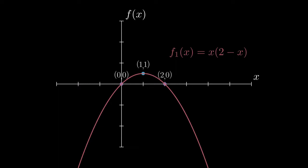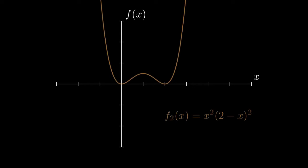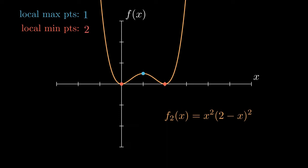We proceed to Part B where we increase n and look for patterns. When n is two, the function — which you can view in the GDC — we're looking for local maximum points, local minimum points, or points of inflection, all places where the gradient is zero. A point of inflection is where the gradient is zero but doesn't change direction. When n is two, we have one local maximum, two local minimums, and no points of inflection.